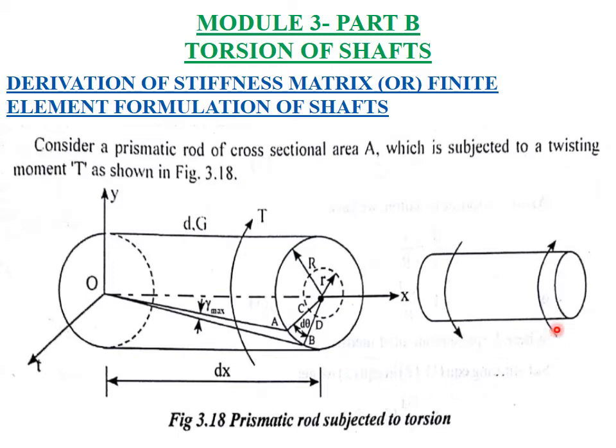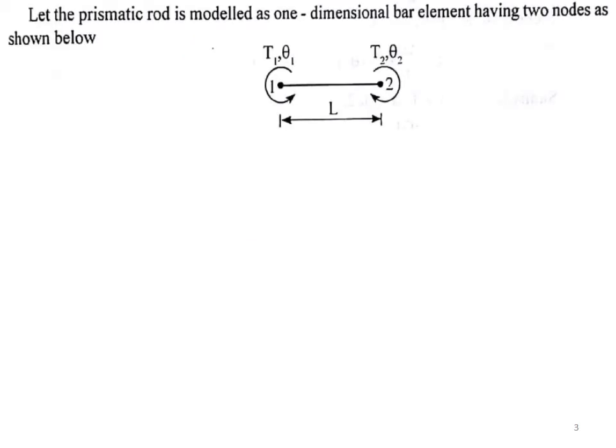X and Y are the directions. This is how the twisting will take place. The prismatic rod is modeled as a one-dimensional bar element which is having two nodes as shown in the figure.